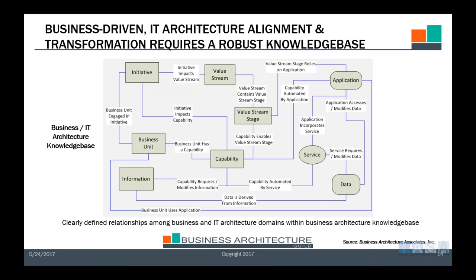Let's take a look at some of the baseline relationships. This is a very simple set of connections, but we'll run through a summary. We're showing here the four main central aspects of business architecture — what we call the core domains: the value stream and related value stream stages; capability, which enables value stream stages; the business units and the relationship that business units have to the capabilities; as well as the information and how it ties back to the capability. Information, business unit, capability, value stream — if you understand those four domains, you've got your baseline business architecture.